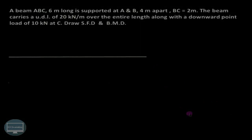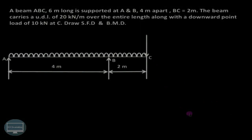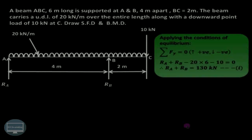Let us try to understand how to find out the point of contra-flexure in case of the overhanging beam as shown over here. It is carrying a UDL over the entire span length of 6 meters and a point load at the end. The first step is always to find out the reactions RA and RB.